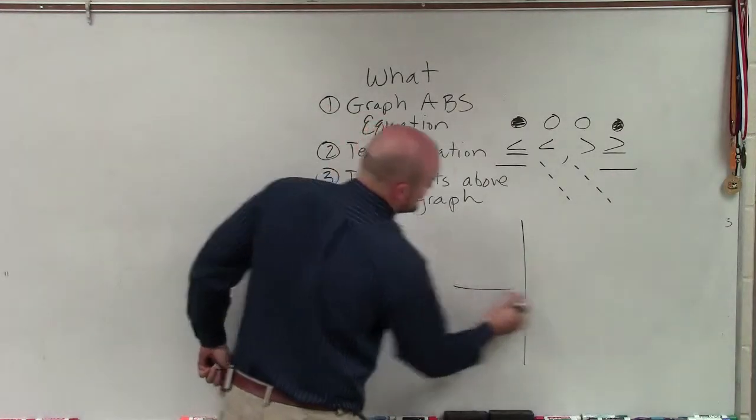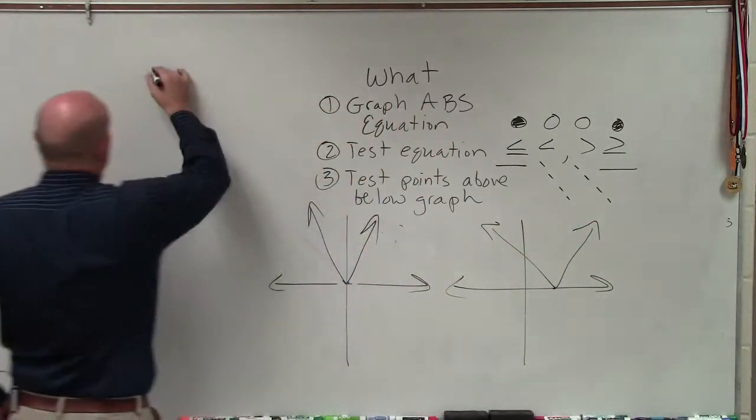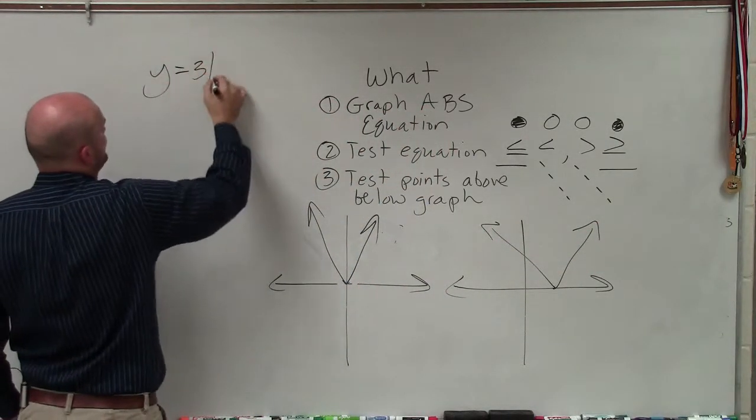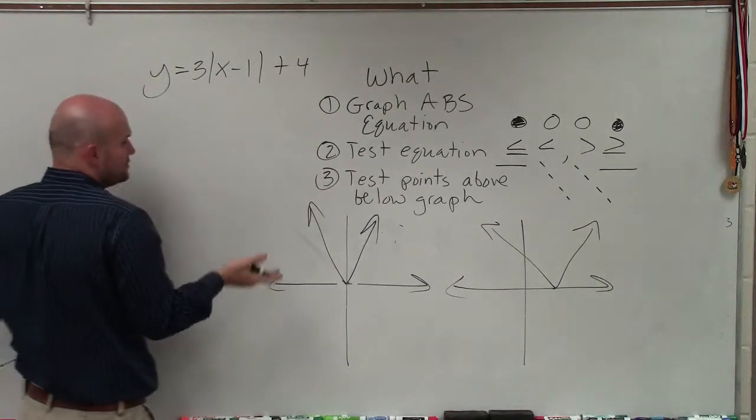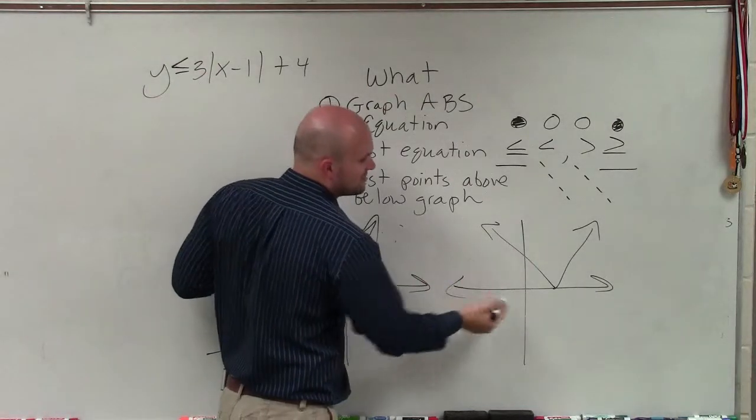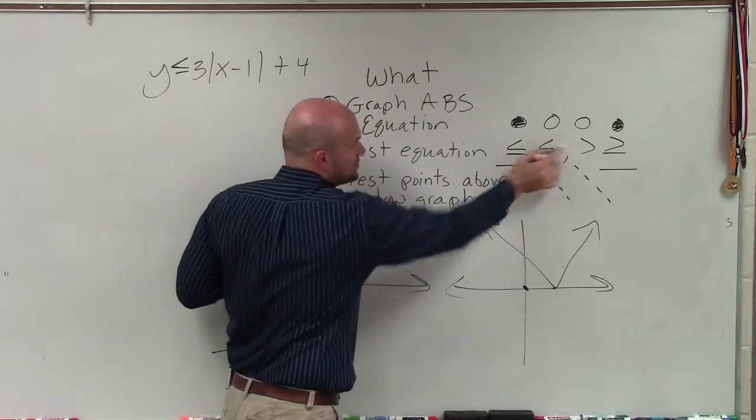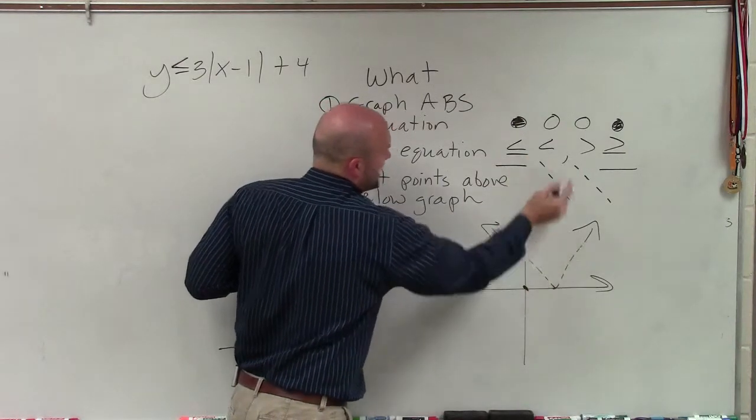...to always choose is (0,0). The reason is because if I had an equation like y ≤ 3|x - 1| + 4, it's easiest to determine. When choosing a test point, you want to choose one that doesn't lie on the line, because usually you're going to be able to test if it's dashed or solid just...